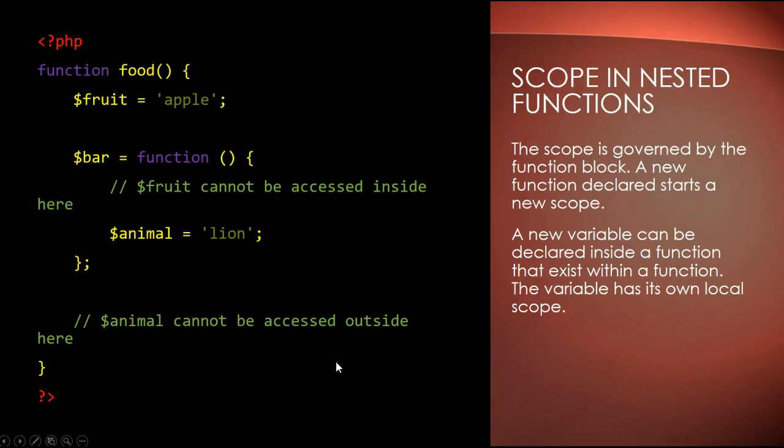Another thing is scope in nested functions. Here you have an example of a function called food and it has a fruit variable declared. Inside the brackets of this function is another function declared with its own variable animal. So fruit cannot be accessed in here without using the global function because it's not part of this function. And animal cannot be accessed out here because it's part of this inner function.